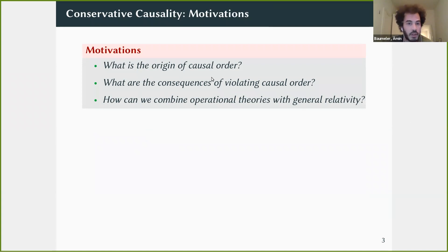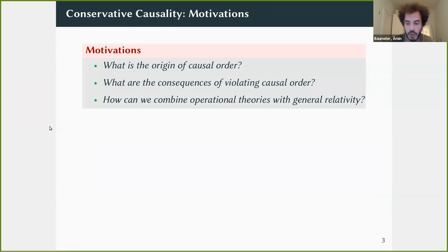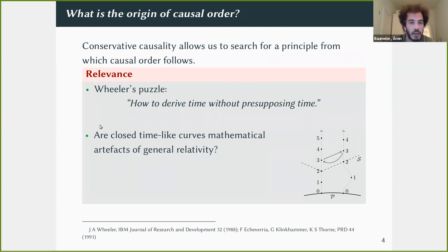Why should one consider such theories at all? In conservative causality we can ask precisely: what is the origin of causal order, what are the consequences of violating causal order, and how can we combine operational theories with general relativity? I will go through these questions one by one to motivate this talk.